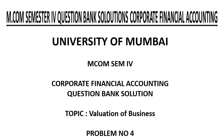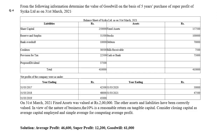University of Mumbai and ComSem corporate financial accounting question bank solution — topic: valuation of business, problem number four. We are going to solve problem number four: from the following information, determine the value of goodwill on the basis of five years' purchase of super profit of Cycle Limited as on 31st March 2021.